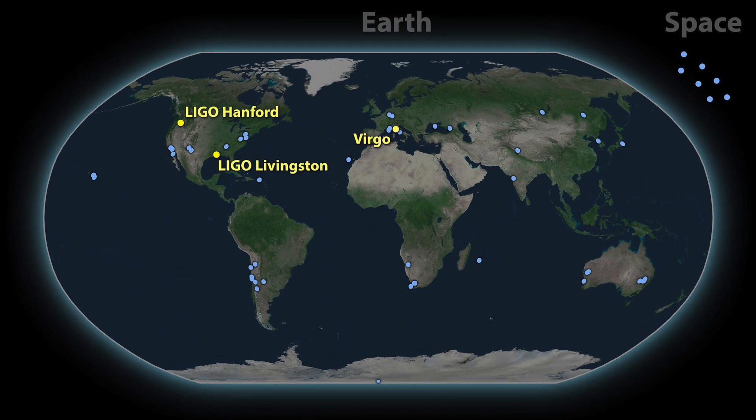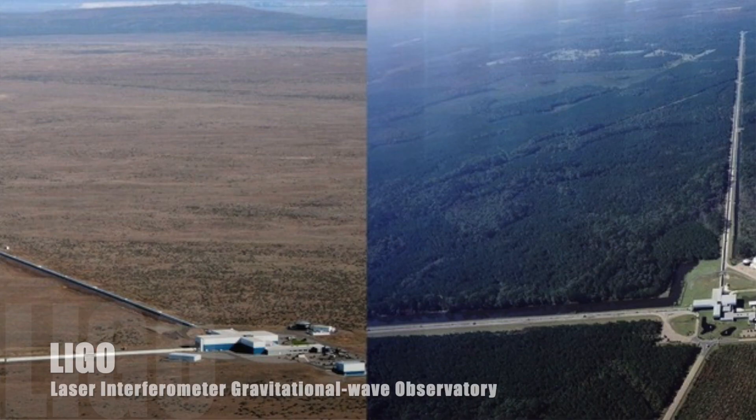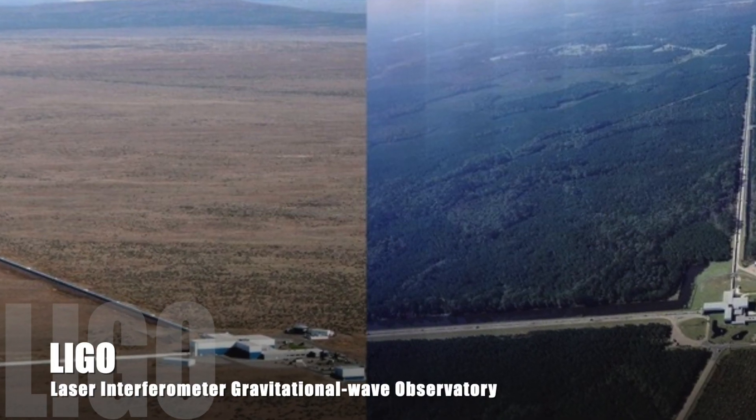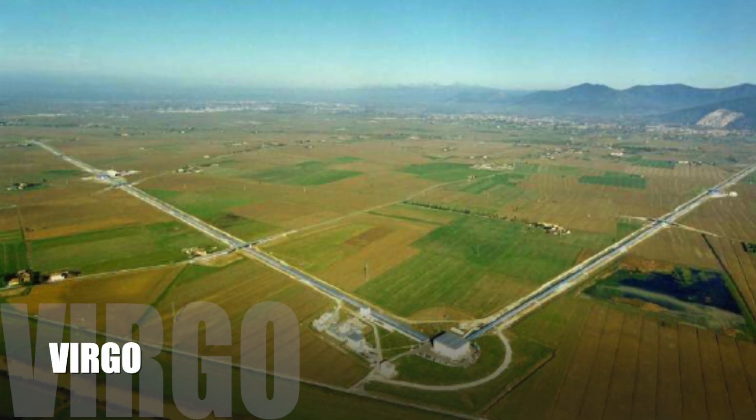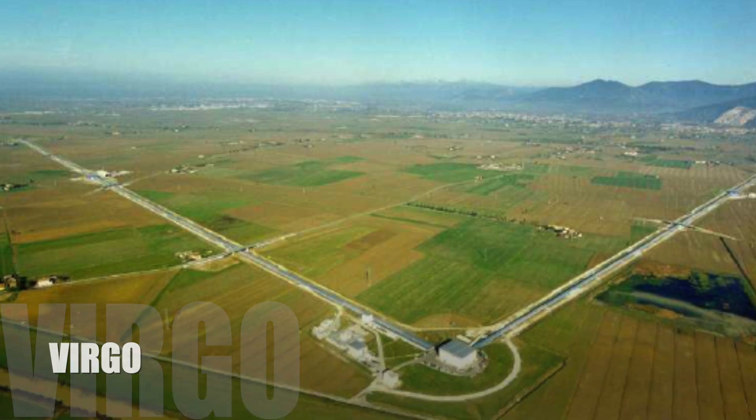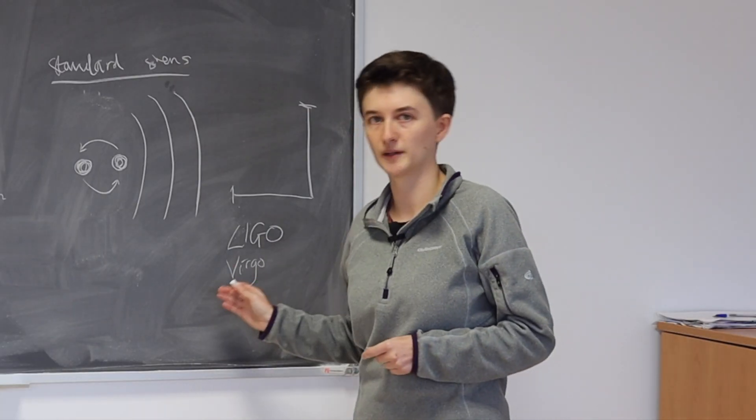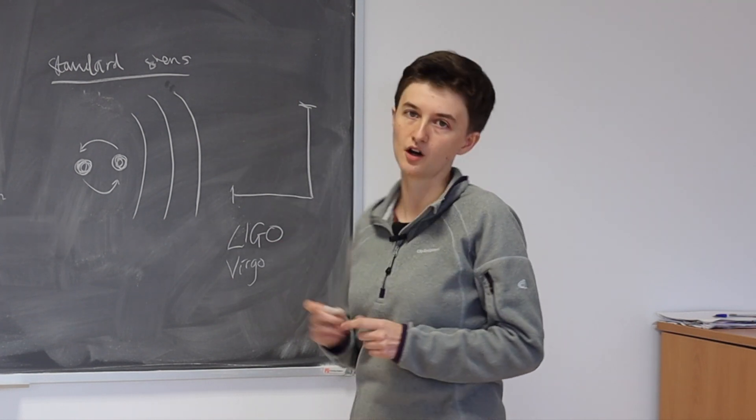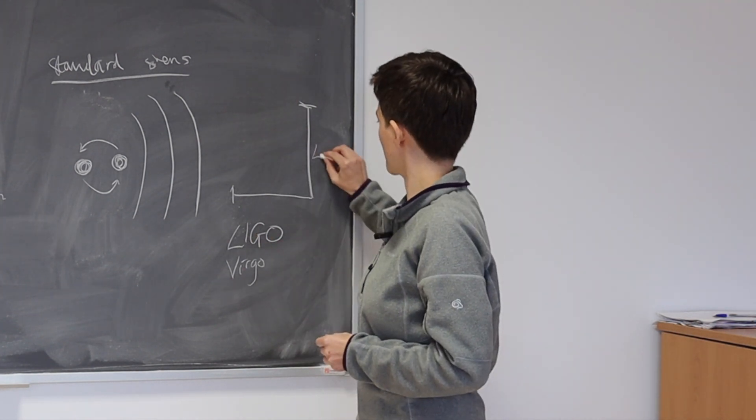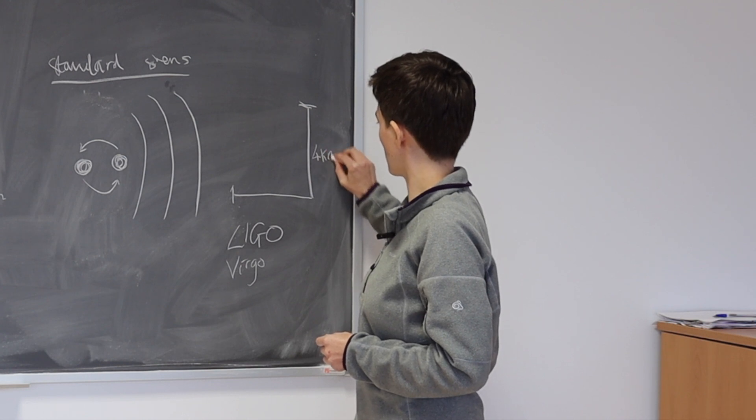We currently have three gravitational wave detectors, two of them part of the LIGO collaboration, which is in the United States, and the third one is part of the Virgo collaboration, which is European, and that's based in Italy. And they all have the same design. They're two arms in an L shape, and each of the arms is around about four kilometres long.